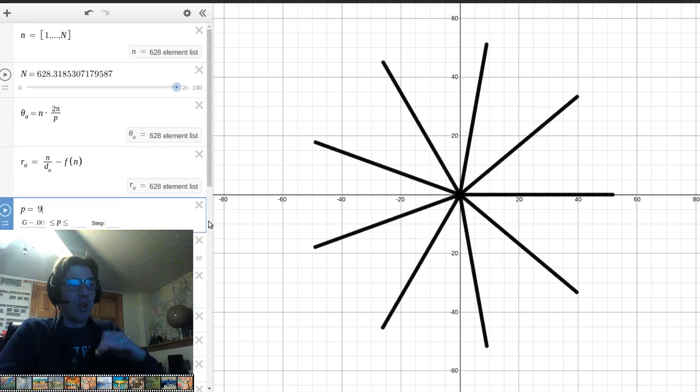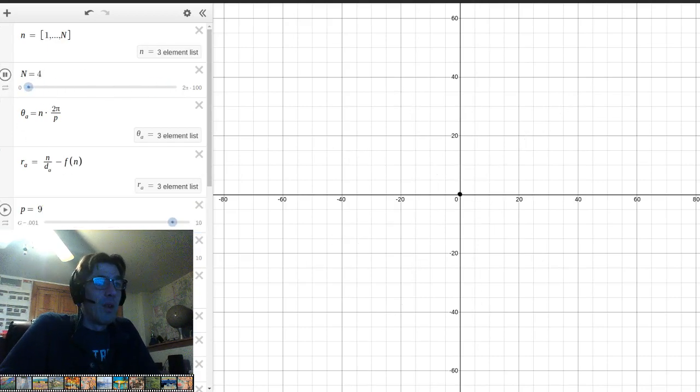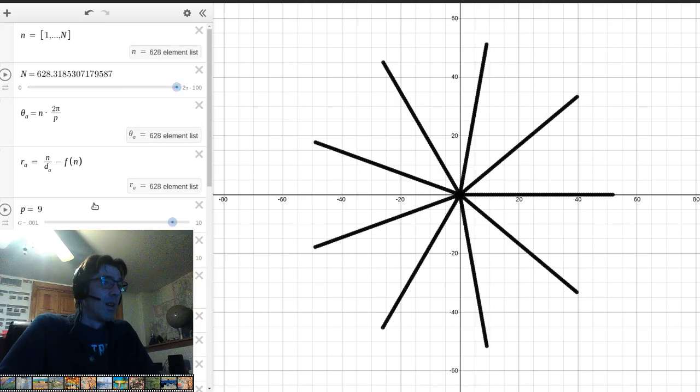Because I'm cutting the circle up into nine parts. So if we go back down here and watch how it grows, it goes around and around. And right now P is nine, so there's nine spokes. You can go ahead and count them.